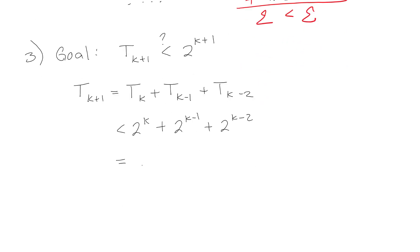So I can go ahead and put an equality, pull out the 2 to the K. I've got 1 plus and that's going to be 1 half, right? Because it's going to be 2 to the negative 1, and then 2 to the negative 2. Also known as 1 plus 1 half plus 1 fourth. And if I'm going to be all mathy about it, 4 fourths, I have 4 plus 2 plus 1. That's going to be 7. So 2 to the K times 7 fourths.